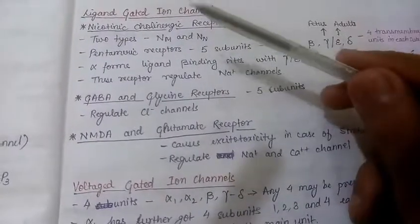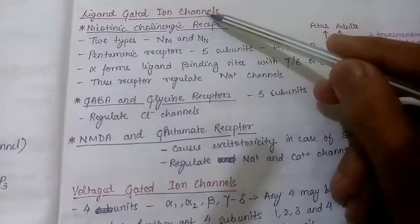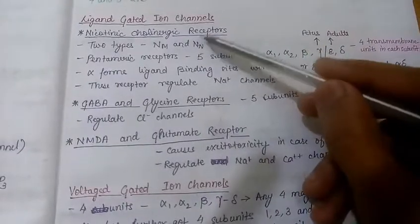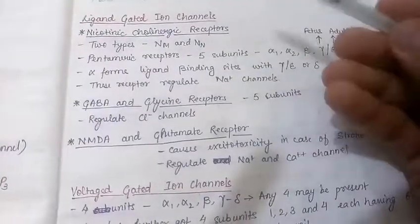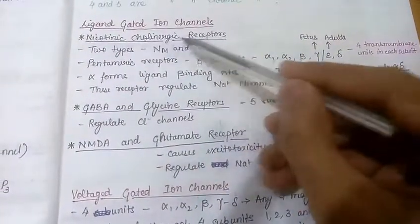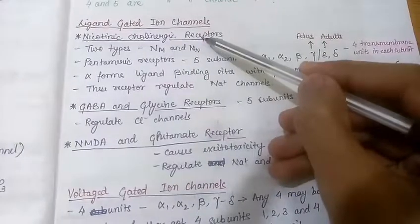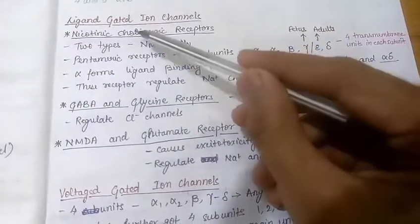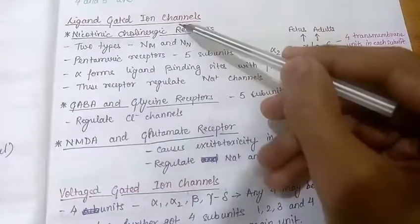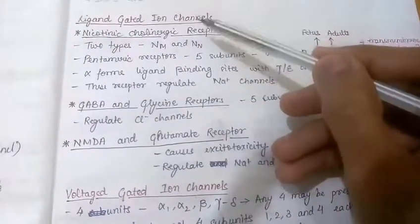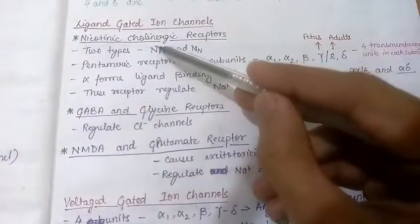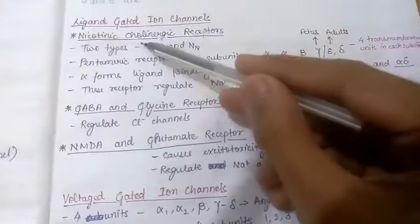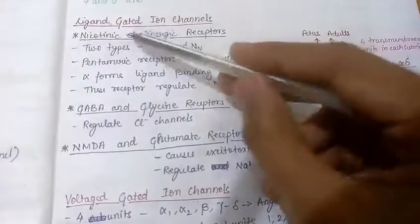We will discuss many receptors which are ligand-gated ion channels. The first one is nicotinic cholinergic receptors — it is an example of ligand-gated ion channels. When acetylcholine binds to nicotinic receptors, there will be influx of ions. Nicotinic cholinergic receptor is a type of ion channel and the ligand is acetylcholine.